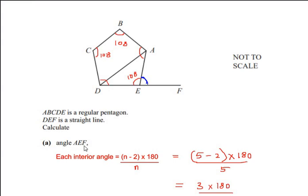Now since we have to find out the angle AEF - that is this angle - and DEF is given as a straight line, we can use the property of a straight line and get this angle as 180 degrees minus 108. That is going to give us an angle of 72 degrees, so the angle AEF is 72 degrees.